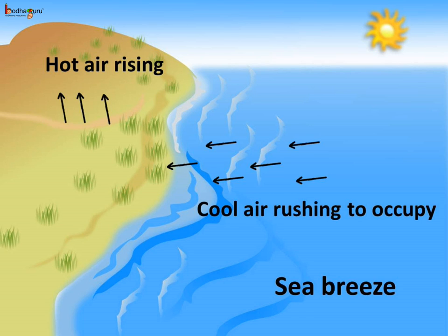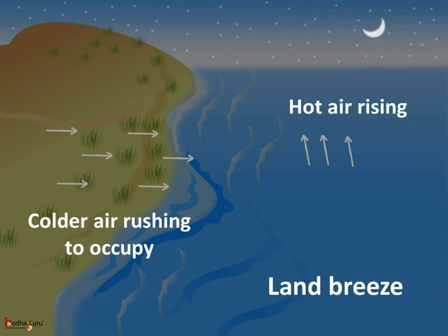Convection also occurs in nature and causes wind. Convection plays a major role in maintaining a moderate temperature near the sea, the river, etc. During daytime the land becomes hot, the air above the land becomes heated and rises up, and the colder air above the sea rushes towards the land to take that place — thus sea breeze blows during the day. At night the land cools down faster than the sea, so the air above the sea remains warmer. The warmer air above the sea rises up and the colder air from the land rushes to take that place — thus land breeze blows during the night.